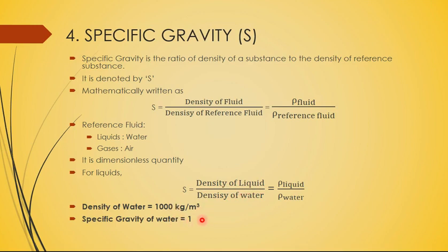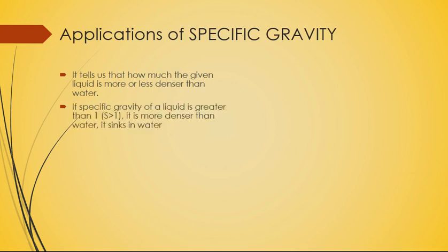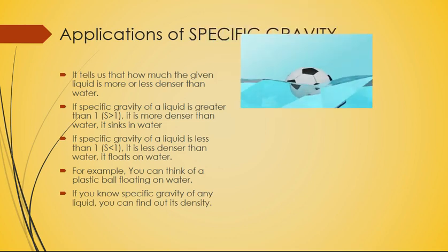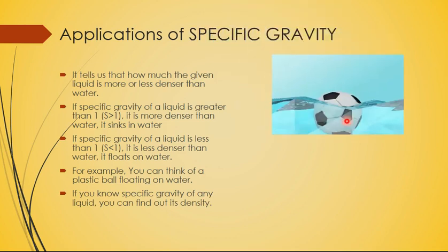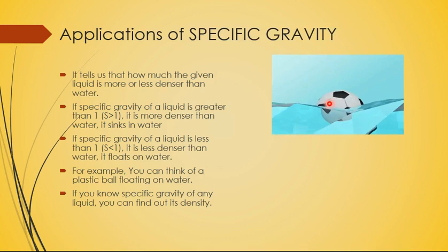Specific gravity shows how much denser or less dense a liquid is compared to water. If specific gravity is greater than 1, the substance is denser than water; if less than 1, it is less dense and floats on water. For example, a plastic ball with specific gravity less than 1 floats on water, while an iron ball with specific gravity greater than 1 sinks because it is denser than water.